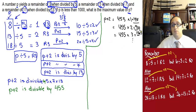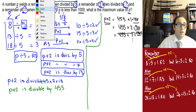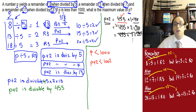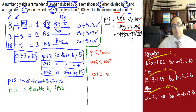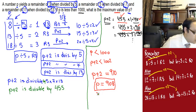So p plus 2 equals either 455, 910, or 1,365. The question says p is less than 1000, so p plus 2 must be less than 1002. Both 455 and 910 satisfy this, but 1,365 does not. Since we want the maximum value, we choose p plus 2 equals 910. Therefore p equals 910 minus 2, which is 908. The answer is 908.